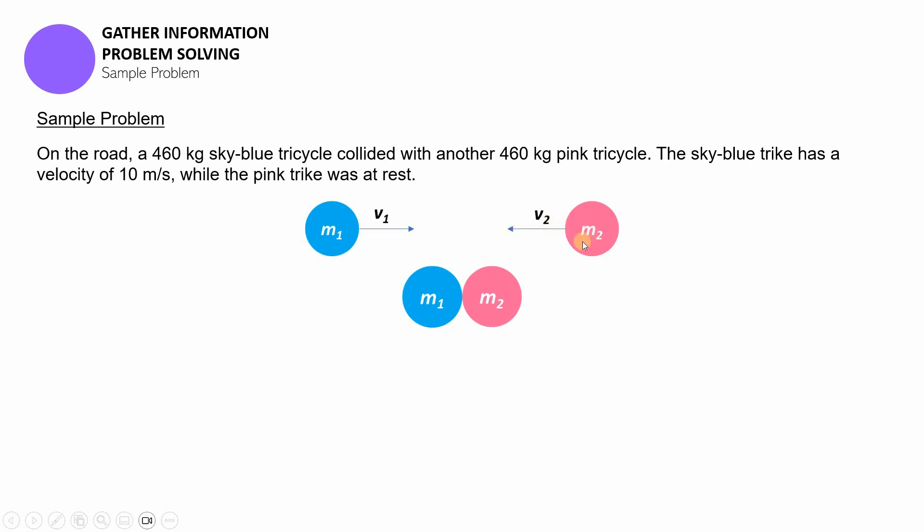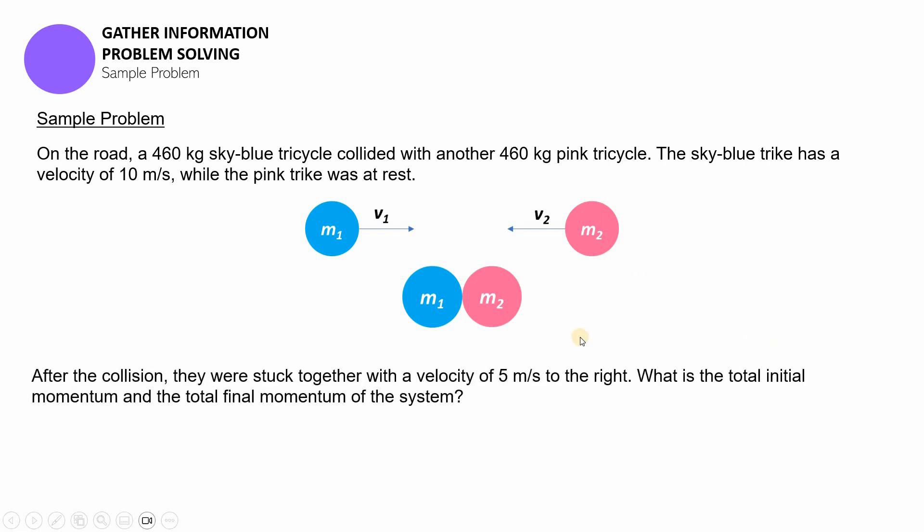Dapat itong arrow na to ng m2 mawawala. That's correct. So when you remove the arrow that means it's stationary, and then the first mass of tricycle, yung sky blue, is the one that's moving towards it. Now after the collision they got stuck with each other and they were simply moving at five meters per second towards the right. So what do you think is the total initial and final momentum of the system?